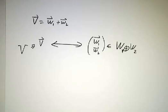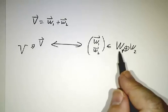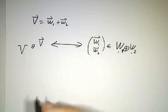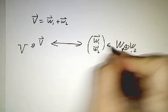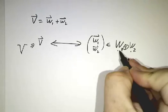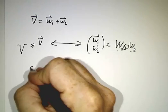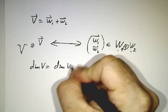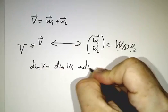Last thing is to note the dimensions. We know that the external direct sum is the dimension of W1 plus the dimension of W2. So for the internal direct sum, the dimension of V has to also be the same thing. So we need the dimension of V to be the dimension of W1 plus the dimension of W2.